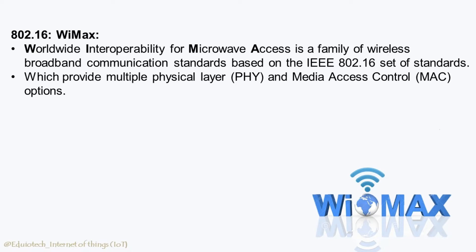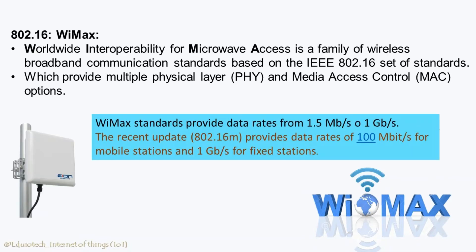IEEE 802.16 WiMAX is a collection of wireless broadband standards — worldwide interoperability for microwave access — a family of wireless broadband communication standards which provide multiple physical layers and media access control options. 802.16 WiMAX standards provide data rates from 1.5 Mbps to 1 Gbps. The recent update 802.16m provides data rates of 100 Mbps for mobile stations and 1 Gbps for fixed stations.